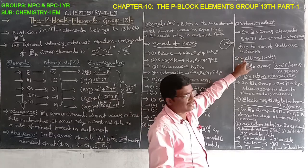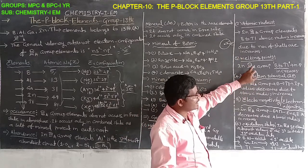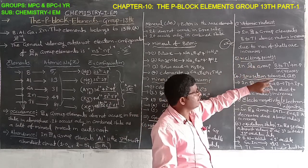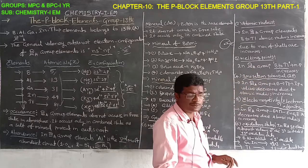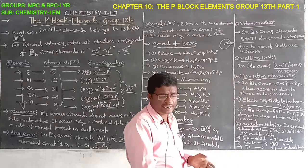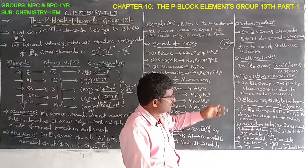Third property — melting points. In 3rd A group elements, from boron to thallium, the melting point increases because atomic radius also increases.